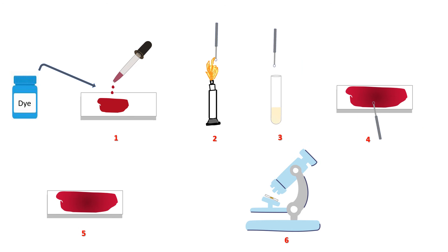Procedure of indirect staining: Place a small drop of dye on a clean glass slide. Heat sterilize the inoculating loop and cool it down. Take a loopful of culture from broth and spread this culture with varying pressure across the slide, making sure the dye is not too thick. Air dry the slide and observe it under a microscope using immersion oil.